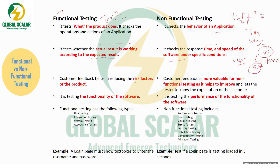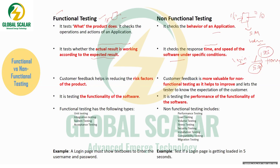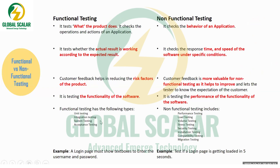Functional testing gets customer feedback because customers use the product or application on a daily basis — they report when specific functions like switches or sensors are not working. Non-functional testing also has customer feedback — customers report how to improve response time or speed of the output, and we check the performance of the software.